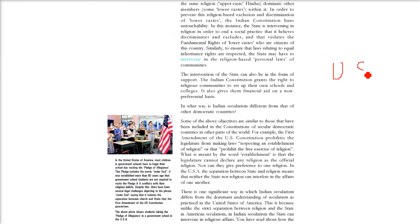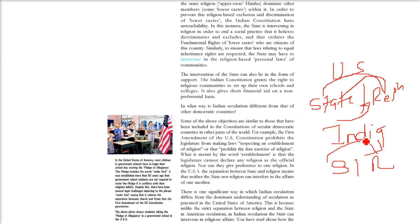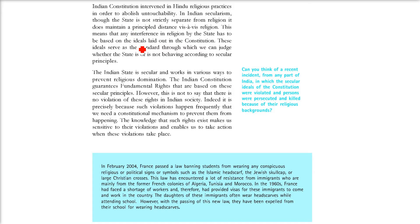In Indian secularism, it differs because the Indian state differs from the dominant understanding of secularism practiced in the US. In America, there is a strict separation between religion and state. But in India, the state can interfere in religious affairs. For example, the Indian constitution abolished untouchability — that is how the constitution, the government, and the state intervened, and we got rid of untouchability, Sati Pratha, and many other things which are better now.